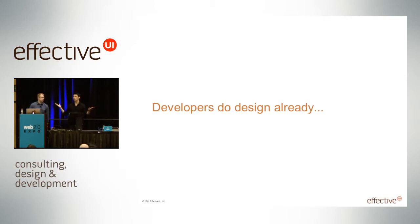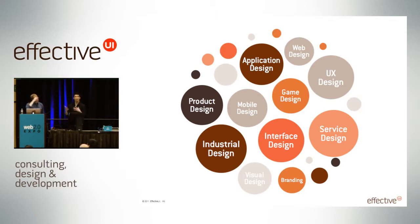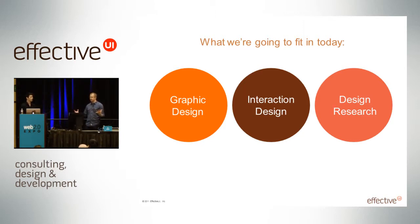So what does design really encompass? It's all kinds of stuff — application design, game design, UX design, service design, interface design, product design, industrial design. Obviously we're not going to cover all that in a short time, so we're going to narrow it to a really discrete piece of the pie. We're going to talk about graphic design, interaction design, and hopefully squeeze in a little bit of design research. Our goal is to break down the discipline into a set of terms and building blocks, and then show you how they relate to things that we do on the web.